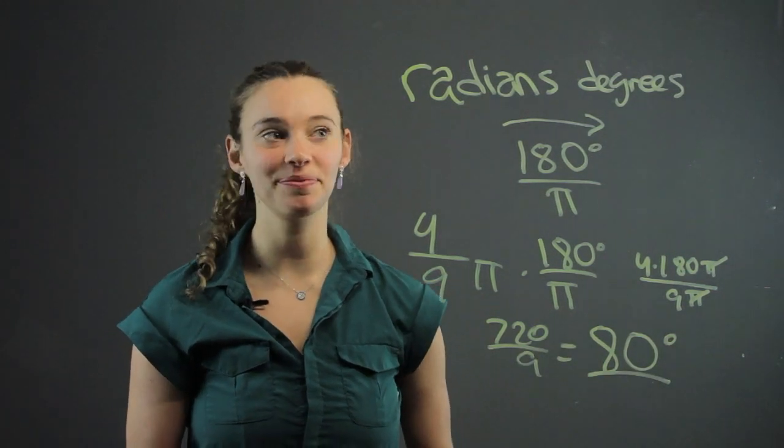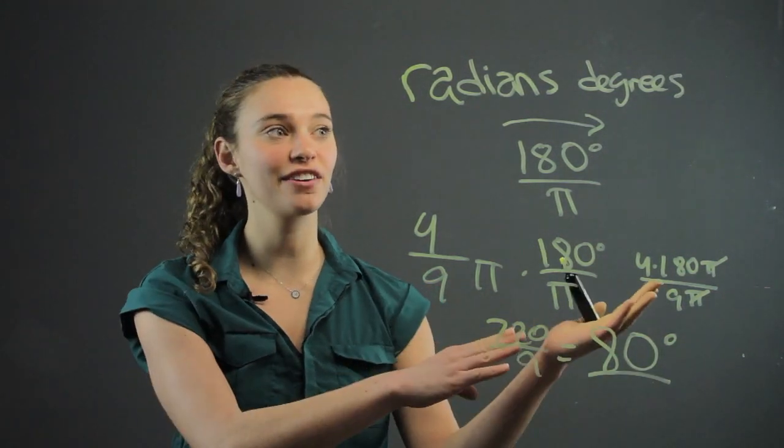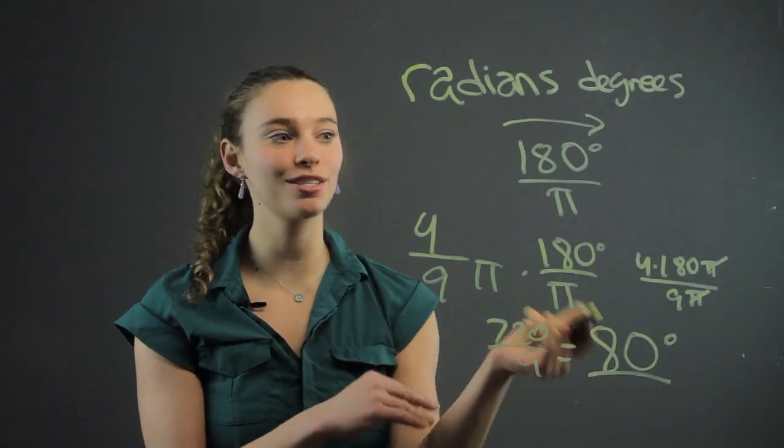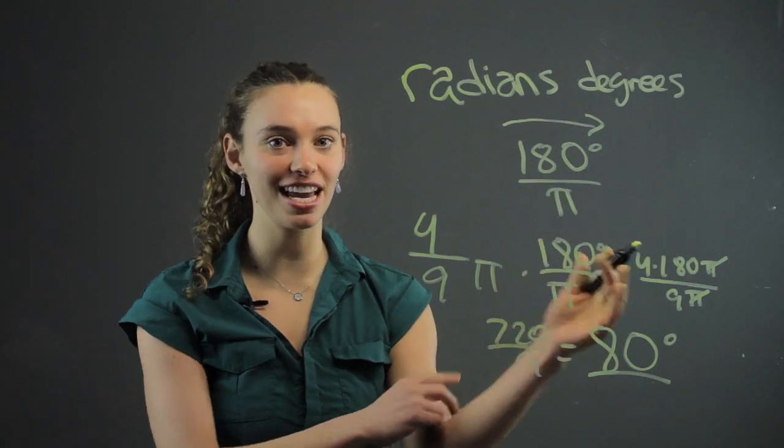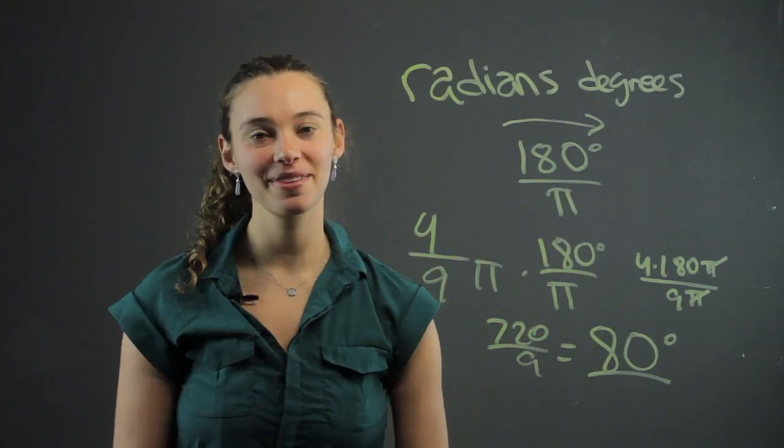It's that simple. When we're doing degrees to radians, we just do the opposite — pi over 180 — to go back the other way.